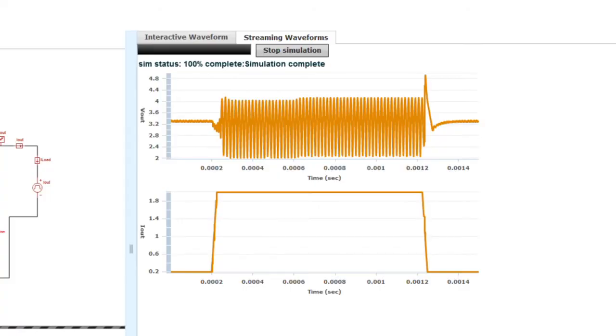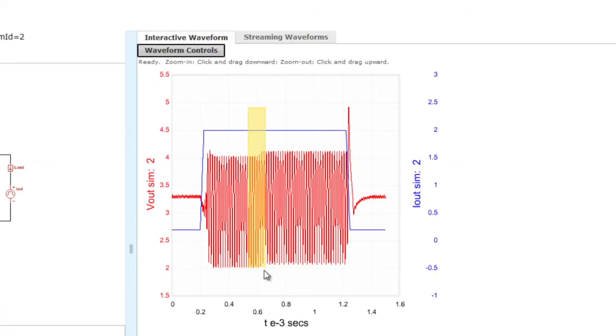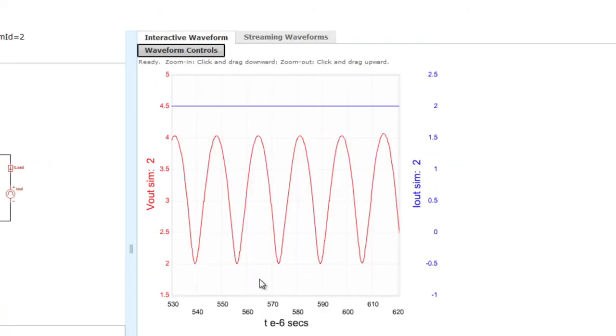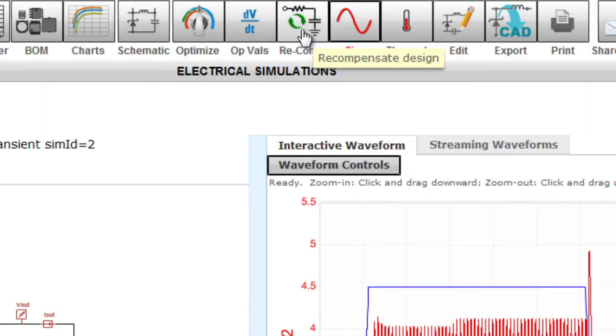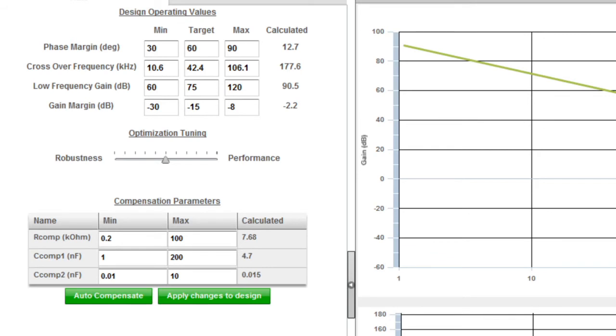After completing your initial WebBench design, let's say you entered a specific capacitor from your approved vendor list, but now your simulation results in poor phase margin. By clicking on the Compensation Designer button, you launch the feature that allows you to come up with the new compensation component values based on your input shown here.